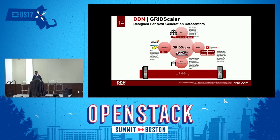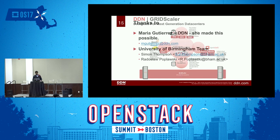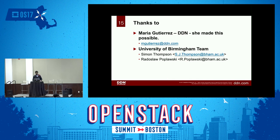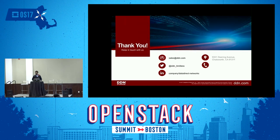Finally, make sure you check DDN Grid Scaler — it can pretty much do everything. It's an all-in-one storage for OpenStack. We have all four drivers: Manila, Cinder, Object, and Glance. And it can do Hadoop as well. It's a high-performance storage. Thanks to my colleague Maria — this work wasn't possible without her. Also the team at University of Birmingham: Simon and Ritzlow. It was really a joint effort on the whole benchmark. Any questions? Thank you.